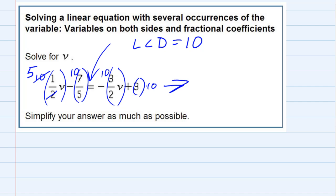Those cancel to leave me 5. So 5 times 1v is a 5v on the left. And then in the next one, that 5 goes into the 10 two times. So 2 times that minus 7 gives me a minus 14.